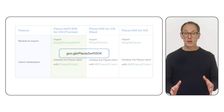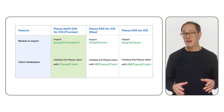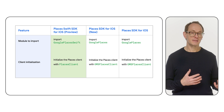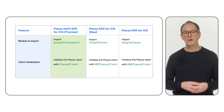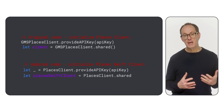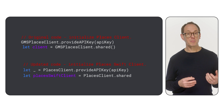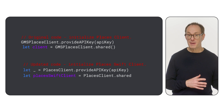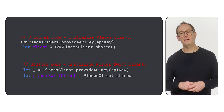The new Swift SDK has different class names and syntax for initialization. To initialize the Swift SDK, you will need to change your code to use PlacesClient instead of GMSPlacesClient.